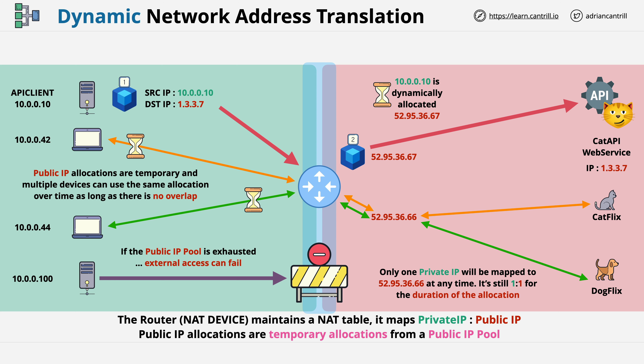This type of NAT is used when you have fewer public IPs than private ones, but when all of those private devices at some time need public access, which is bi-directional.